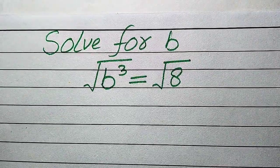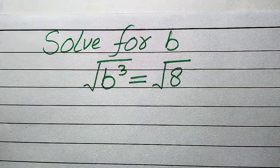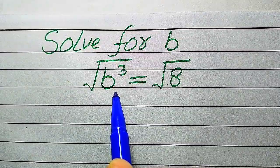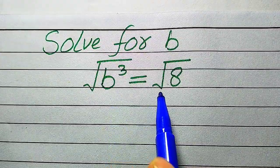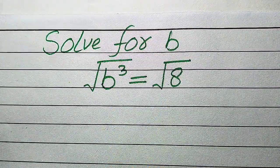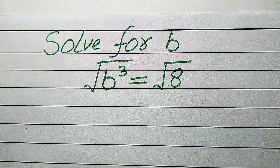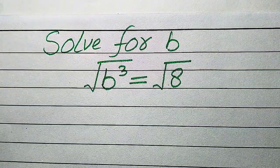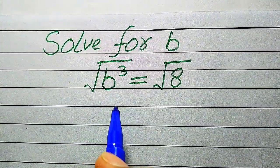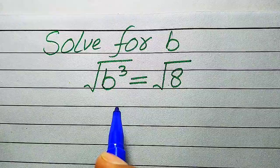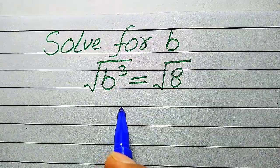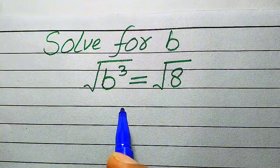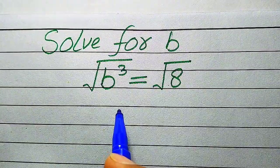Hello everyone. How to solve this problem: for the values of b, if we have b cubed and its whole square root is equals to square root of 8. We solve this problem for all the values of b. This is a cubic equation, which means this equation has three roots, so we need to find all three roots.